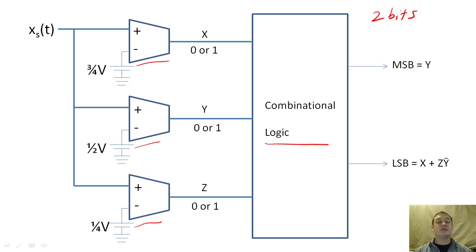For example, here it's zero to a quarter volt, a quarter to a half a volt, and so on. After our comparators have completed their circuit analysis, we then use simple combinational logic to map or encode our voltage into a binary number.